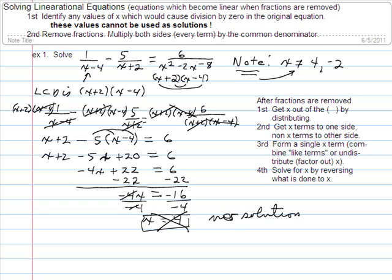or I could say the solution set is the empty set, which is a zero with a line through it. Either one of those would be a good answer to put on a test, either the empty set or no solution. And that concludes Solving Linear Rationals, Part 2.